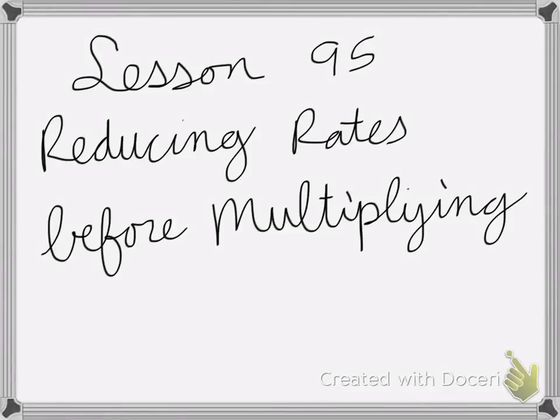All right, so lesson 95 is on reducing rates before multiplying. Here we have multiply 55 miles per hour by 6 hours.